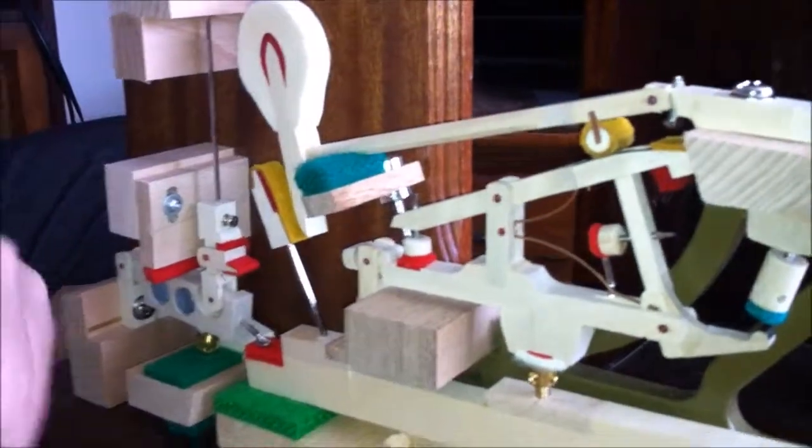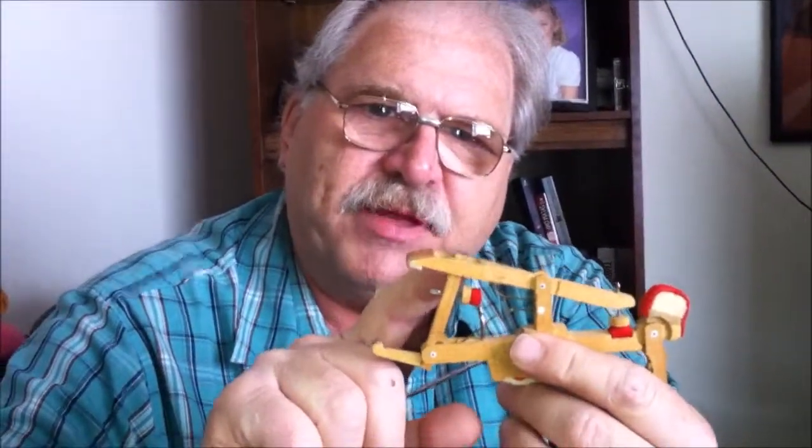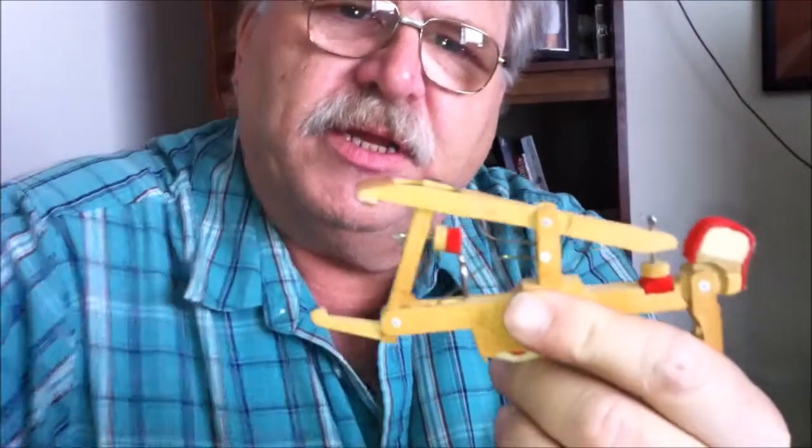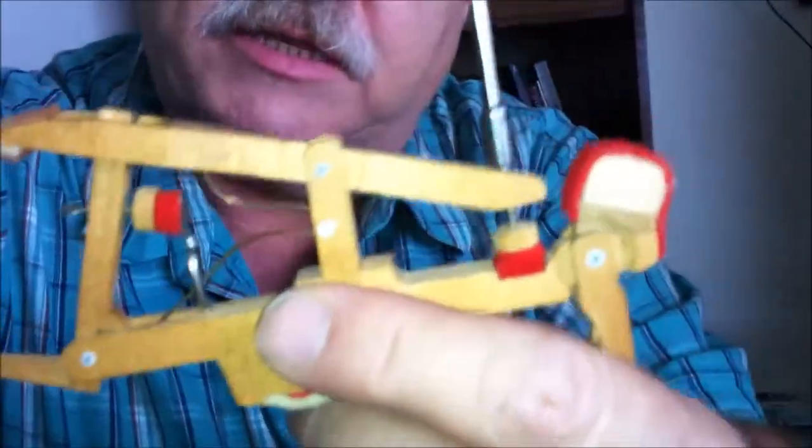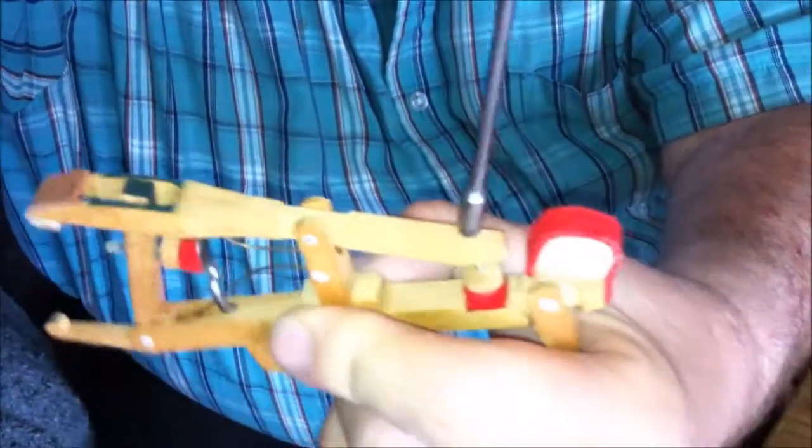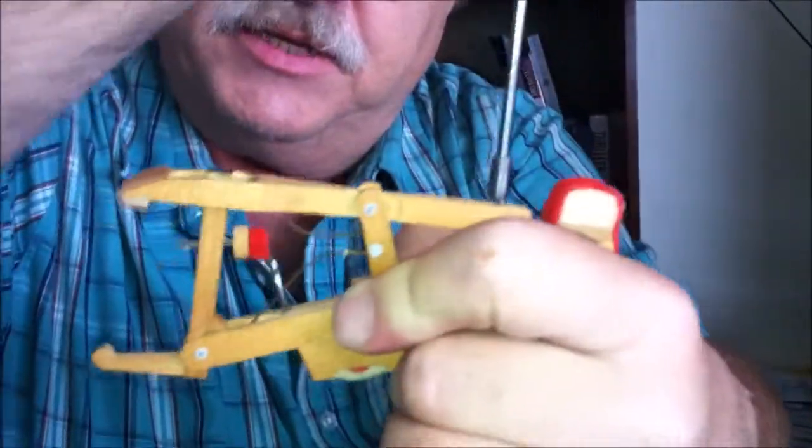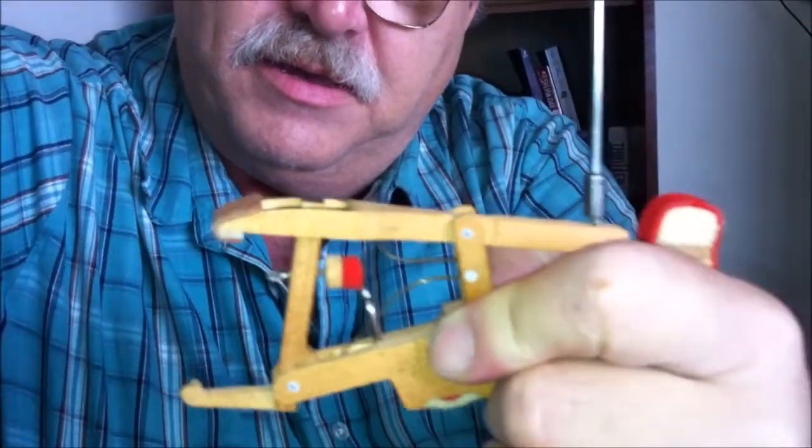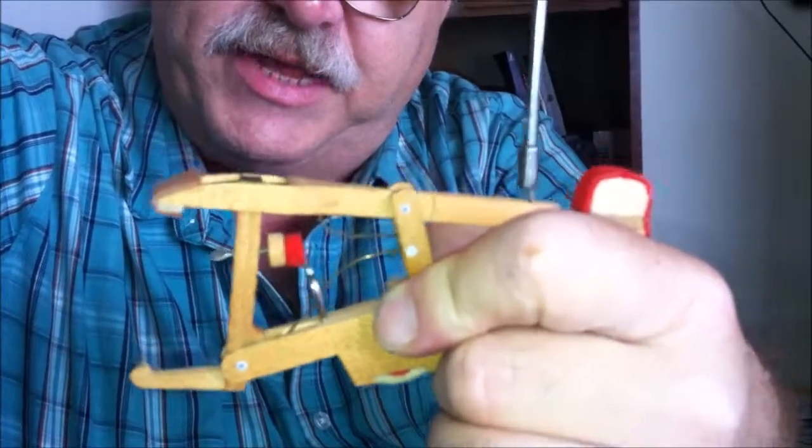If you take a look at this part here, I adjusted this repetition lever so that the jack is sticking out above the repetition lever. To adjust it so that the knuckle is below the jack, you have to adjust it down until the jack is below the repetition lever. See it going down?